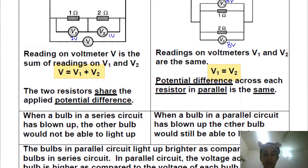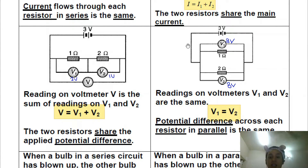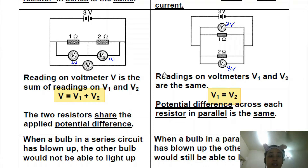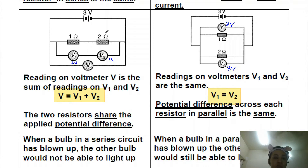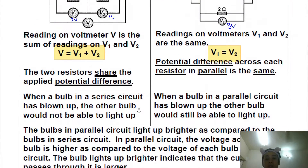In a parallel circuit, because the currents are still moving through the other branch, the remaining bulb can still light up. The brightness depends on the voltage. Since voltage is shared in a series circuit, each bulb only gets a fraction — maybe 2 volts or 1 volt — so brightness is lower. In a parallel circuit, all bulbs get the full 3 volts, so bulbs in a parallel circuit are always brighter than in a series circuit.